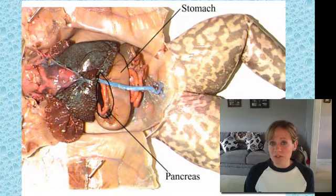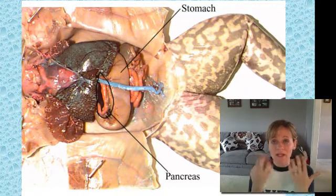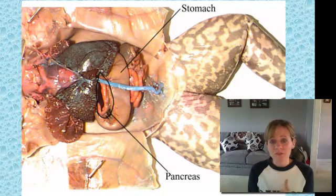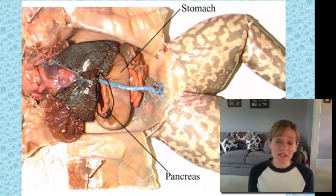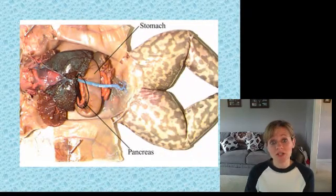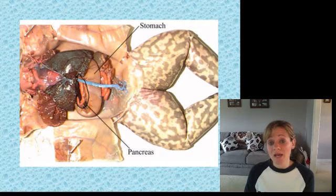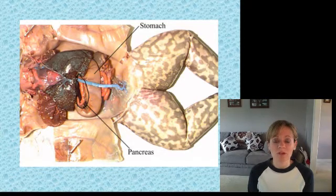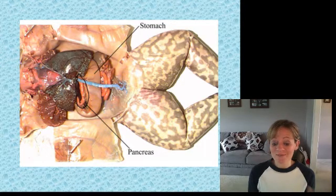The dissection guide will first ask you to do some external anatomy — look at the eyes, tympanic membrane, and mouth, feel the skin, legs, and feet. Then you'll open them up and eventually remove all the organs so you can see the kidneys underneath. If you get a female, you'll be able to see all of her eggs, which are really black. It's going to be really exciting — I hope you're excited to dissect a frog.